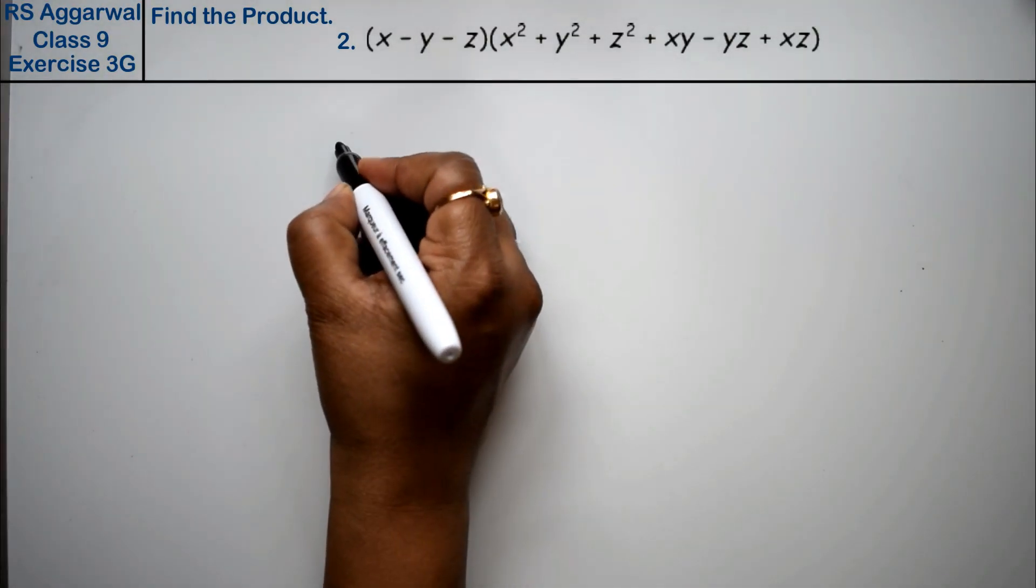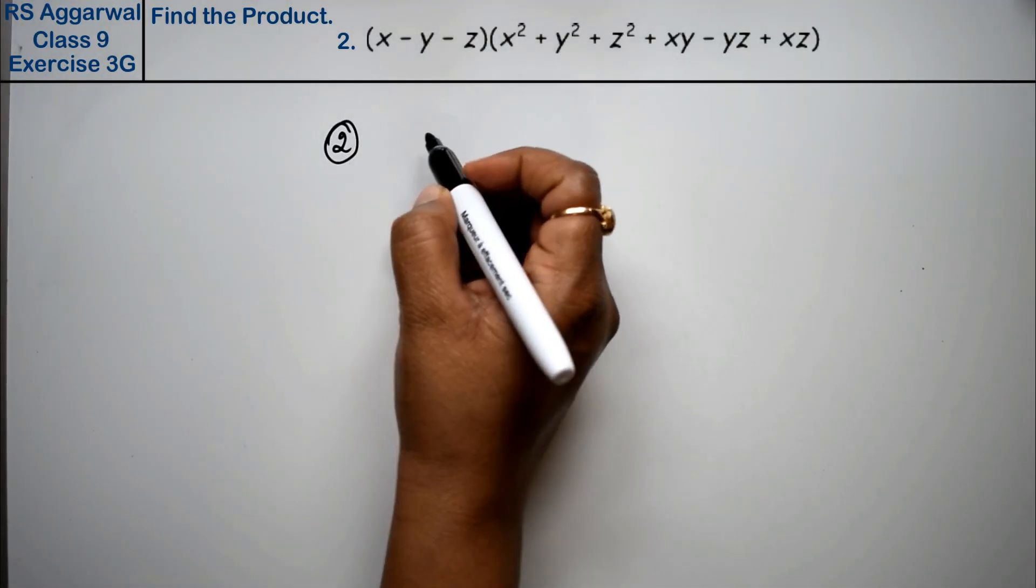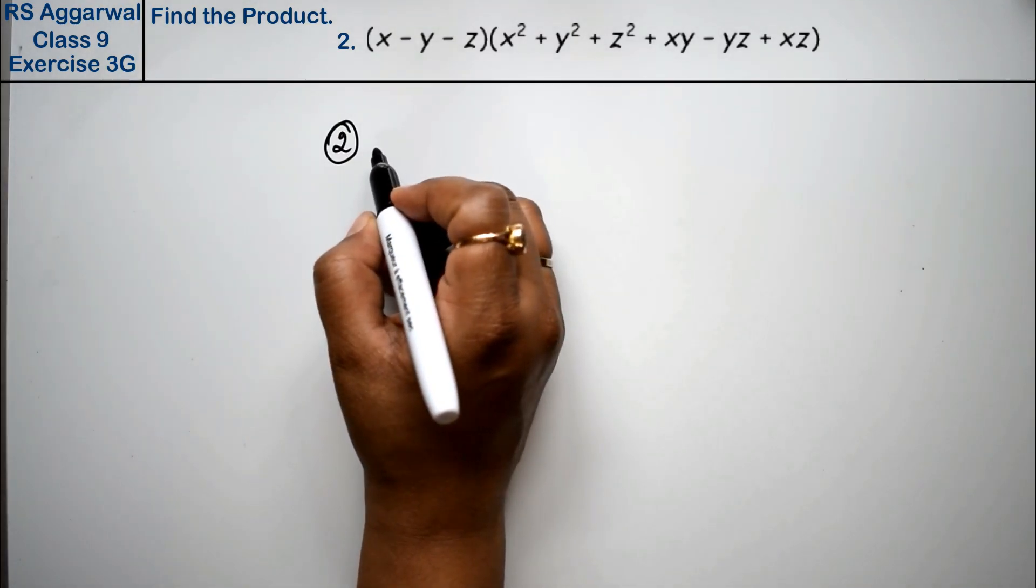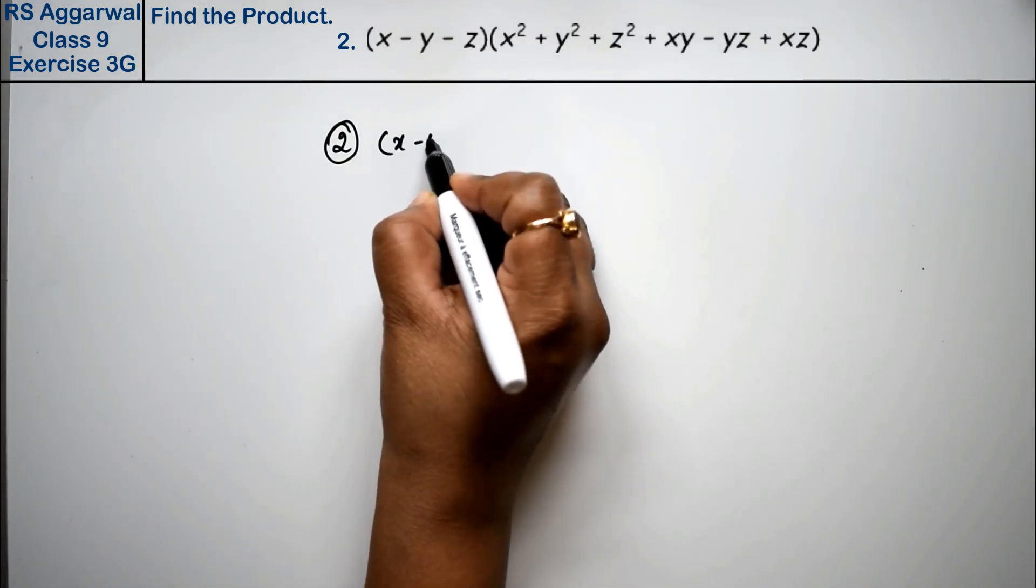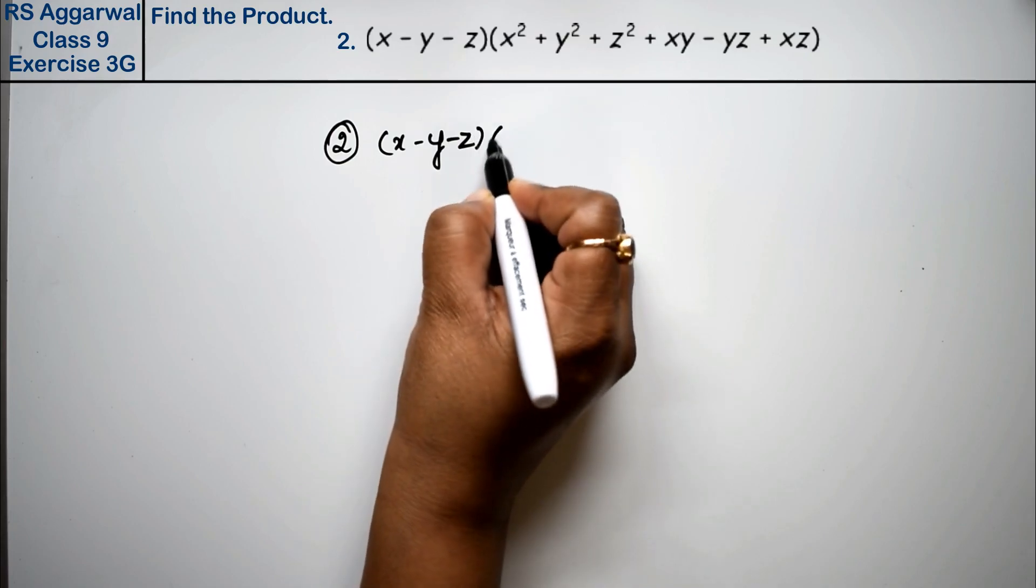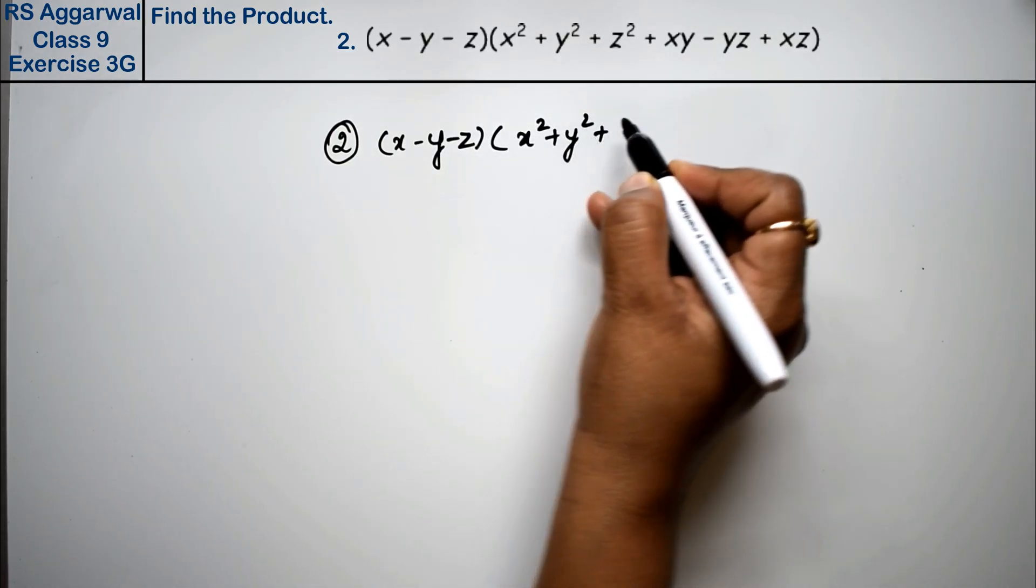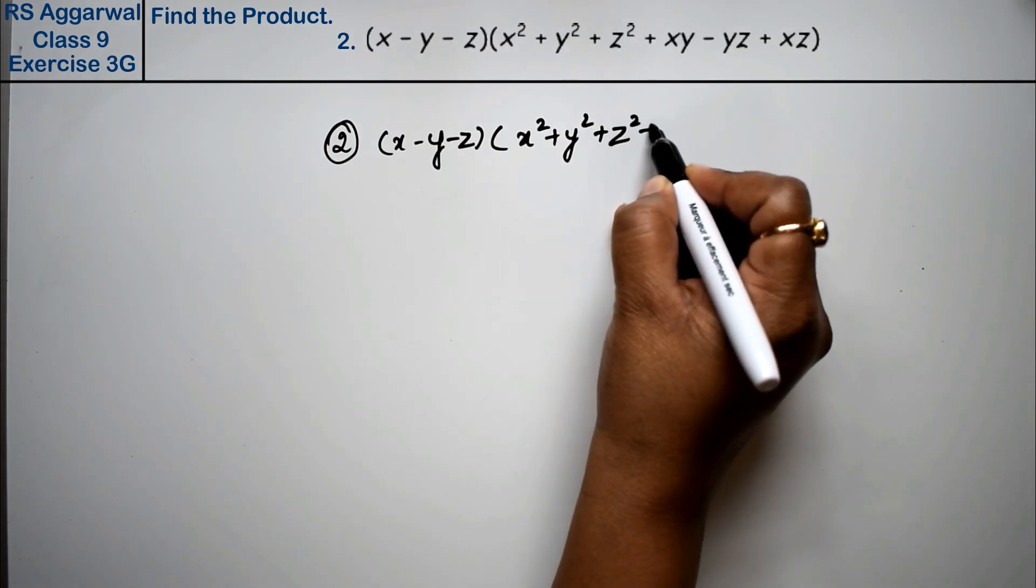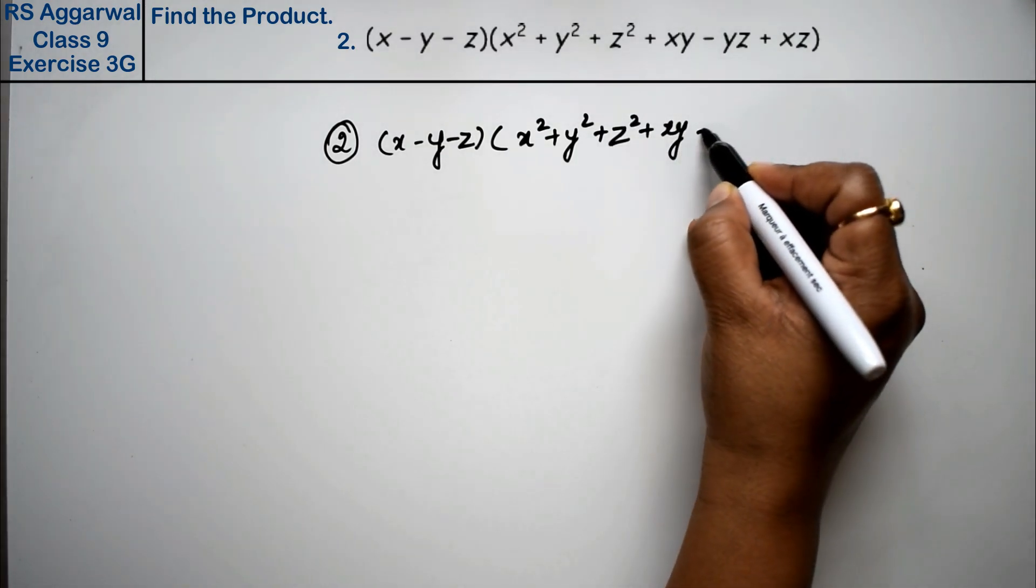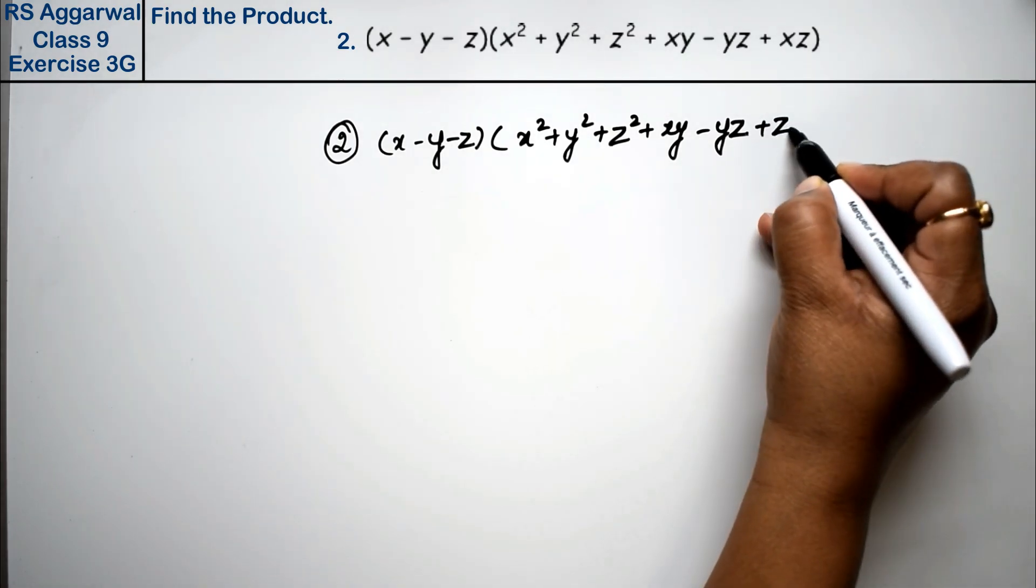Let's do question number 2 of exercise 3G, that is factorization of polynomials. Question number 2 is (x - y - z)(x² + y² + z² + xy - yz + zx).